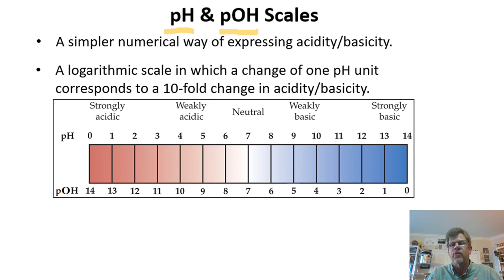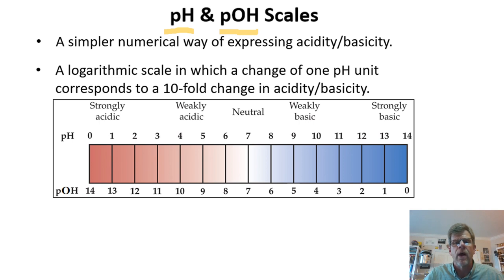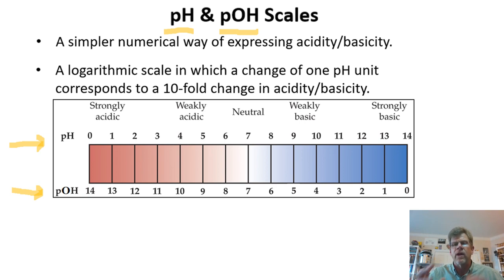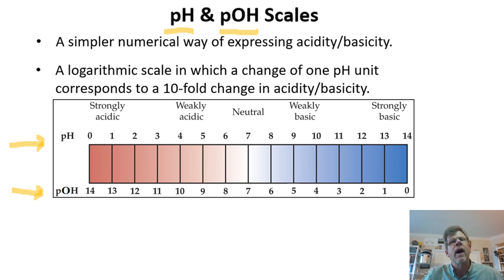Each number on the scale represents a tenfold increase or decrease in concentration, depending on which way you go. Those tenfold concentrations, now that we're on a logarithmic scale, correspond to one single unit. Just as we had hydronium ion concentration on top and hydroxide ion concentration on the bottom in the previous lecture, we now have a very similar scale where it is pH and pOH instead. Just as hydronium and hydroxide ion concentrations are relatable by their product always equaling 10 to the minus 14th, we'll find that pH and pOH of a solution are also relatable in that way.